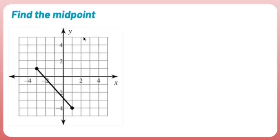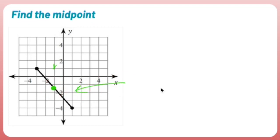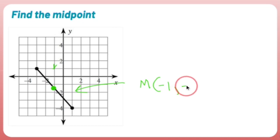Find the midpoint. The midpoint is exactly what it sounds like — it's a point in the middle of a line segment. We have an endpoint at (-4, 1) and an endpoint at (1, -4). The distance between x-values is 5 and the distance between y-values is 5, so the midpoint M is approximately (-1, -1.5).